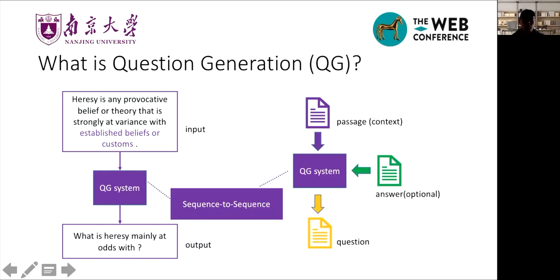With the development of neural network technology, most current approaches address QG by applying the sequence-to-sequence framework. A sequence-to-sequence framework contains two parts. An encoder converts the inputs into vectors, and a decoder generates a question with the encoder's vectors.